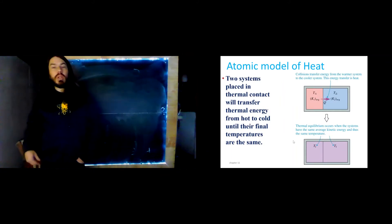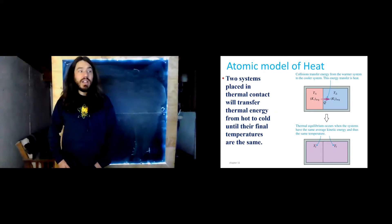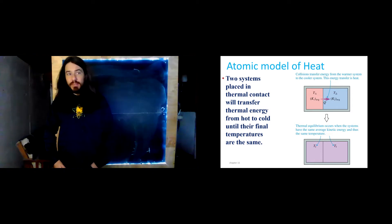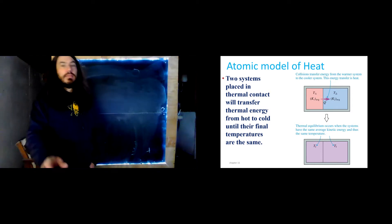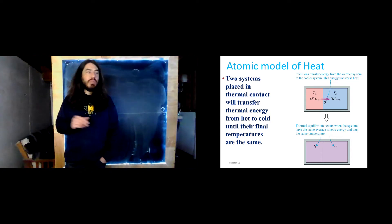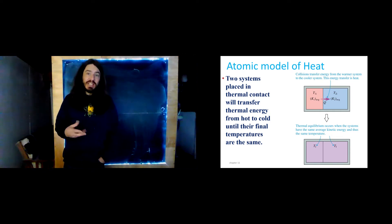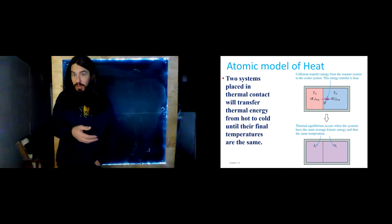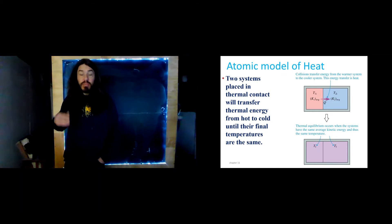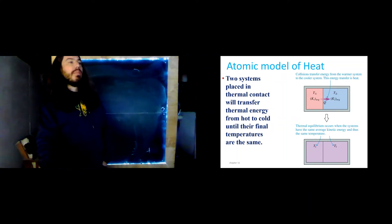Two systems placed in thermal contact will transfer thermal energy from hot to cold until their final temperatures are the same. This happens spontaneously. As we'll learn here in a bit when we cover refrigerators and heat engines, we can move heat from a cold object to a hot object. It just takes an additional input of energy in order to make that happen.